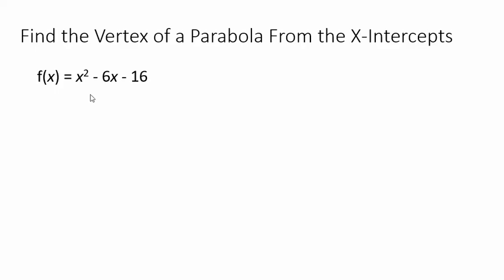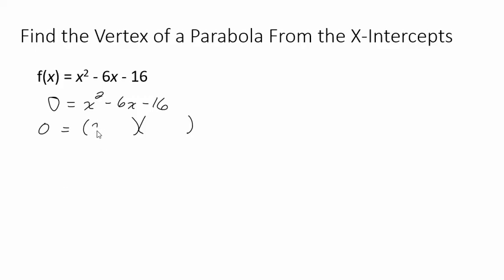Let's start off with this example and find the x-intercepts. To find the x-intercepts we need to let y equal 0. This is factorable — you could use the quadratic formula, but let's factor it. We need to figure out what multiplies to be negative 16 and adds to be negative 6, and that would be negative 8 and positive 2.